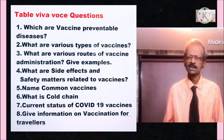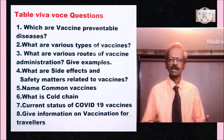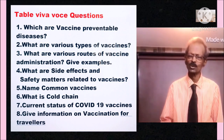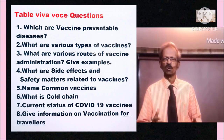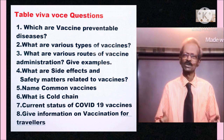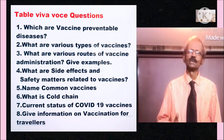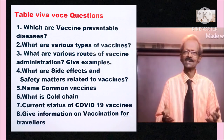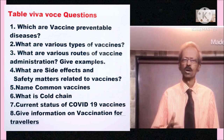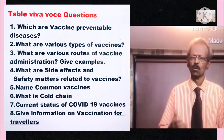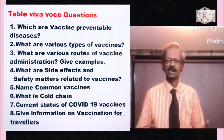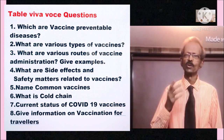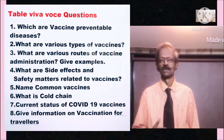Try to solve these viva voce questions: 1. Which are vaccine-preventable diseases? 2. What are the various types of vaccines? 3. What are the various routes of vaccine administration? Give examples. 4. What are common side effects and safety methods related to vaccines? 5. Name common vaccines. 6. What is a cold chain and its importance? 7. What is the current status of COVID-19 vaccines? 8. Give information on vaccination for travelers.